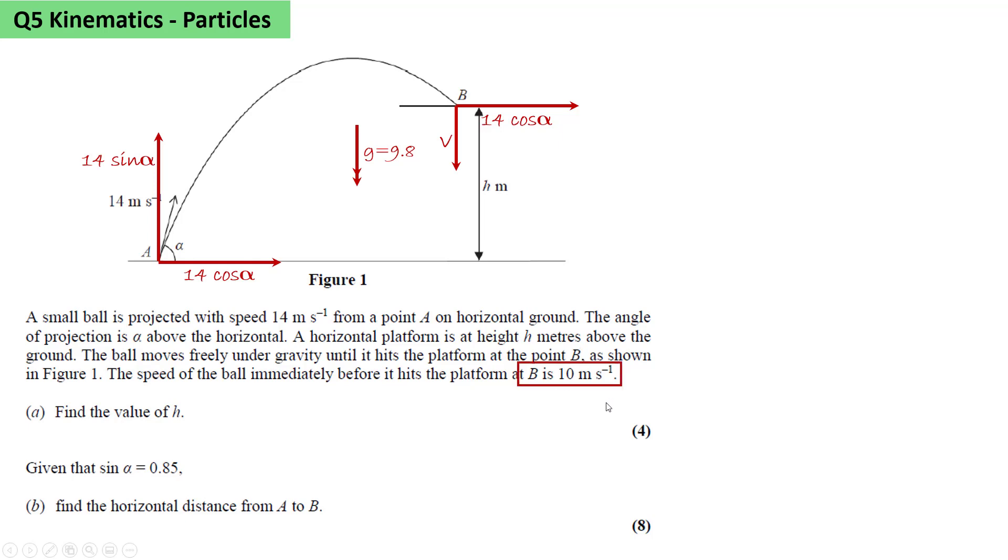And we'll write V for the vertical velocity at B. Now, as the speed of the ball is 10 meters per second immediately before it hits the platform, then we know that V squared plus 14 cos alpha all squared would equal 10 squared.